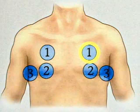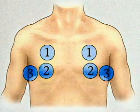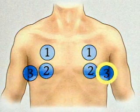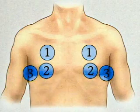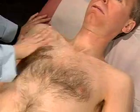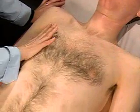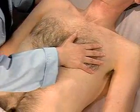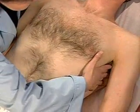Next, following this pattern, palpate for tactile fremitus. Whenever you put down your hand, ask the patient to say 99. As the patient repeats 99, use the ball of your hand to compare symmetrical areas. Because fremitus is difficult to feel through the breast tissue of women, you may need to gently displace the breast.